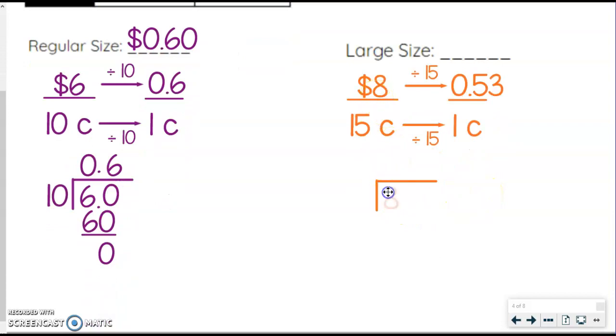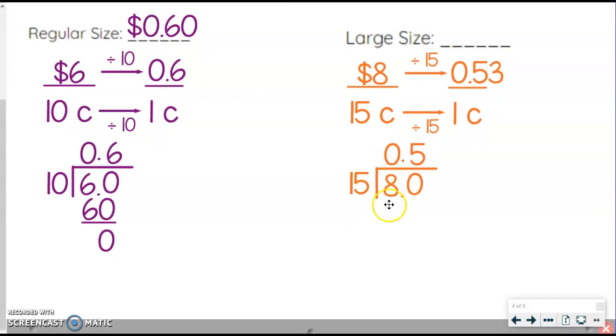We got eight on the inside, fifteen on the outside. Fifteen doesn't fit into eight, so we're putting our zero. We got our decimal, bringing it up, add our zero - just like we've been doing it. We're pros at this by now. Fifteen fits into eighty - doesn't fit in exactly this many times, but five is as close as we can get. That gets us to seventy five. Eighty minus seventy five leaves us with five. So that means we're going to have to actually add another zero. We haven't done that yet. We have to do that on this one. We're going to add our zero and bring it down.